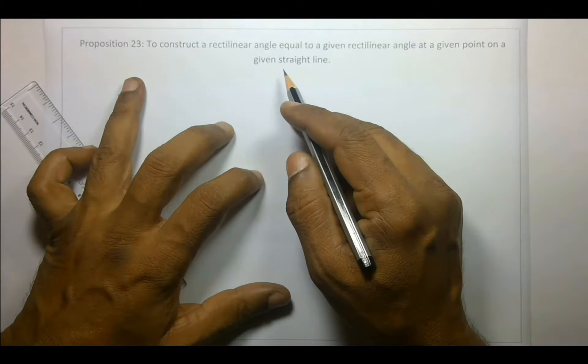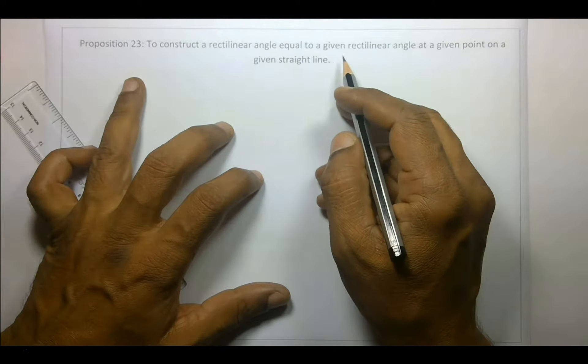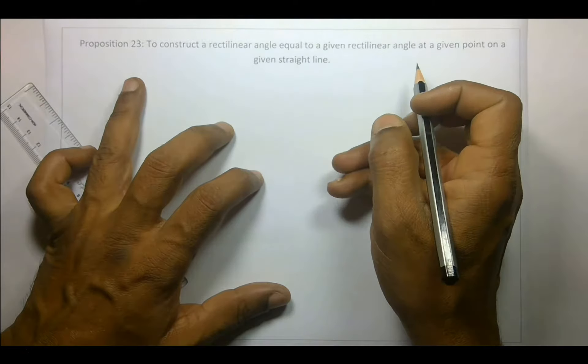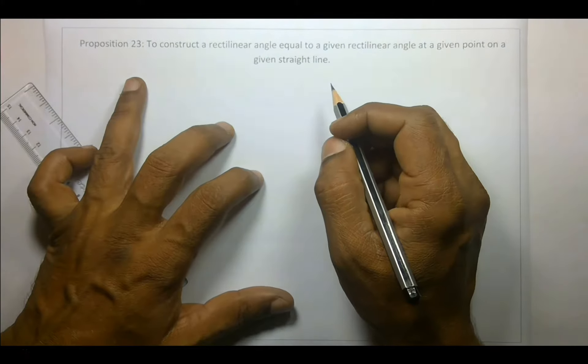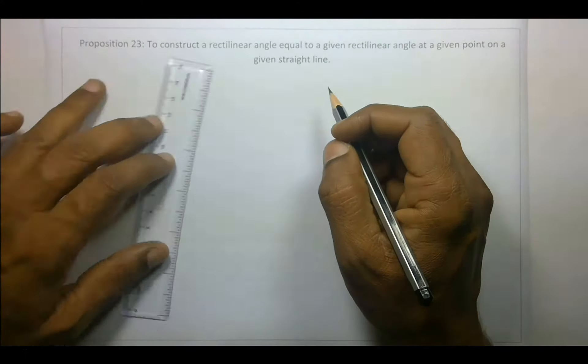Proposition 23: To construct a rectilinear angle equal to a given rectilinear angle at a given point on a given straight line. There are too many givens.